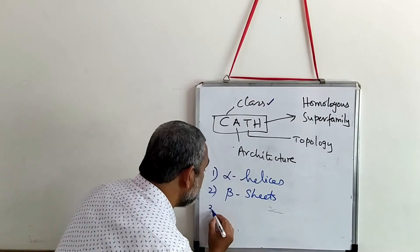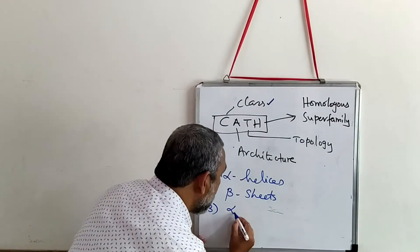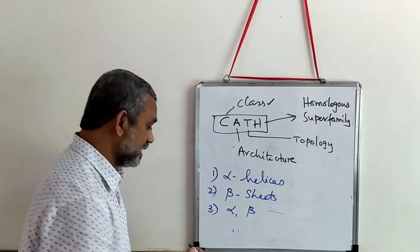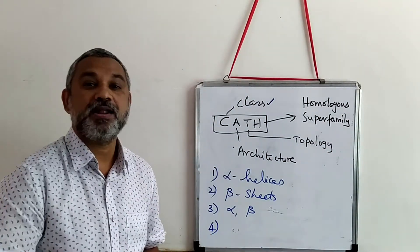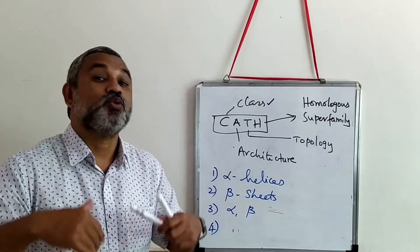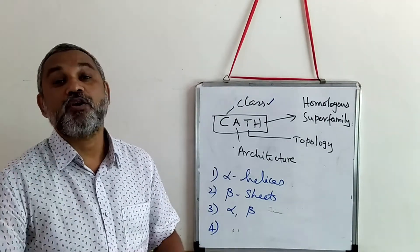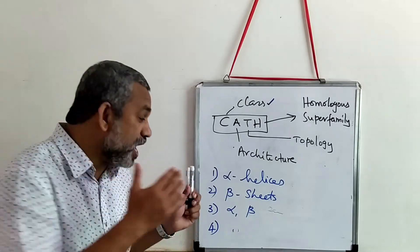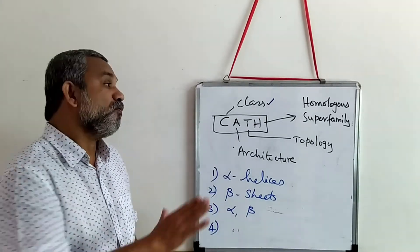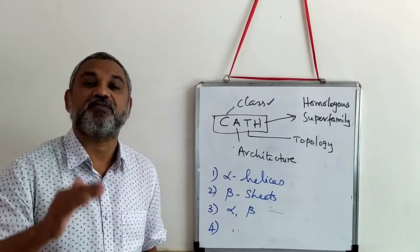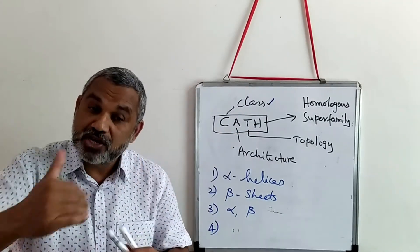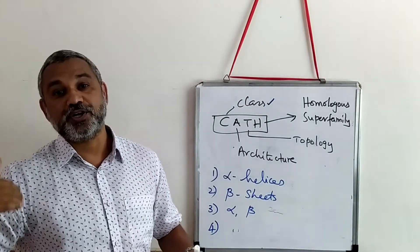The fourth class covers those folds that cannot be classified into any of these categories at all. So these are the four different types of classes you will identify in the CATH kind of structuring of the domains. In the next level of organization according to the CATH classification is the Architecture.